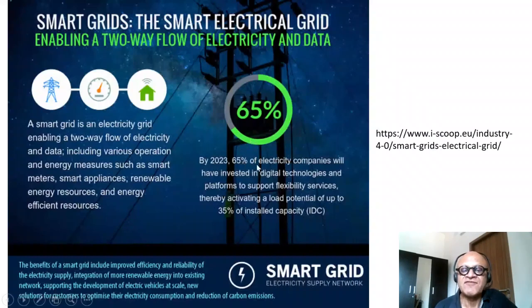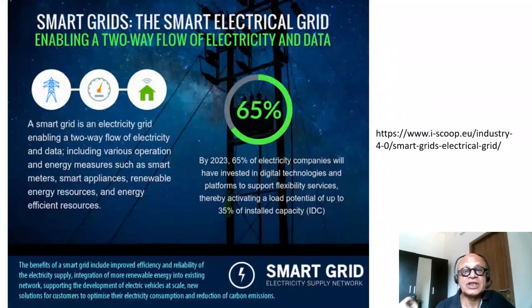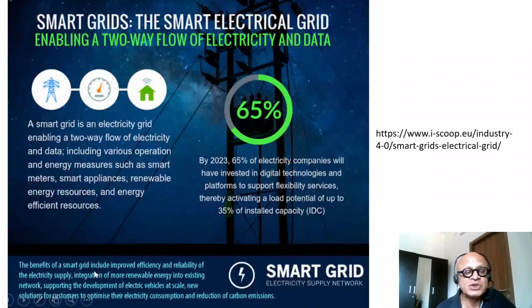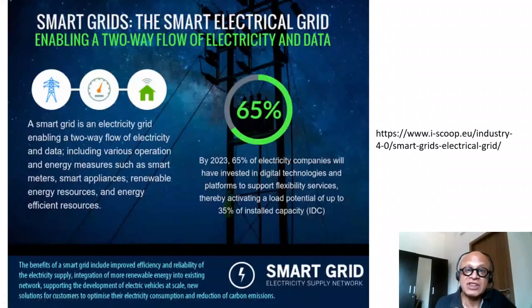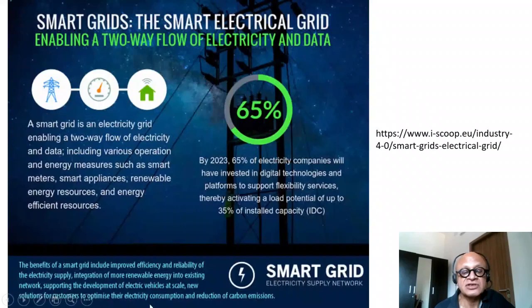By 2023, 65% of electricity companies will have invested in digital technologies and platforms to support flexibility services, activating a load potential of up to 35% of installed capacity. Benefits include improved efficiency and reliability of electricity supply, integration of more renewable energy into existing networks, supporting development of electric vehicles at scale — which can take energy during off-peak hours and contribute back to a local microgrid — and new solutions for customers to optimize consumption and reduce carbon emissions.